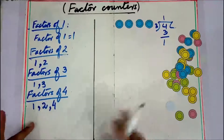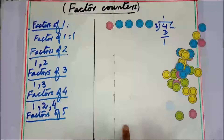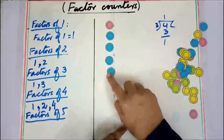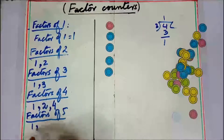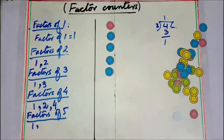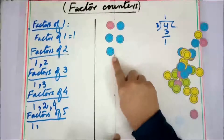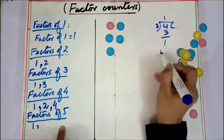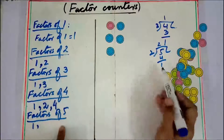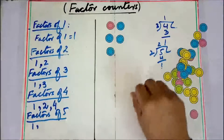Now I am finding the factors of five — I take five counters. Can we divide into groups of one? Yes, so one is a factor of five. Now dividing into groups of two — there would be one as a remainder. Five divided by two gives two remainder one, so if there is a remainder, the number is not a factor. Two is not a factor of five.